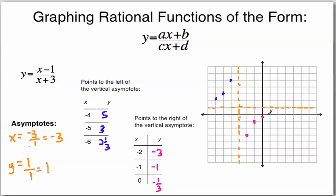Now we're going to draw in our curves. When you draw curves for a hyperbola, it's a curve that gets really close to the asymptote without ever crossing it. So we draw one branch here — really close to the asymptote without crossing it. Then we draw the second branch, connecting the dots with a nice curve, with the ends getting close to the asymptotes without ever crossing them. And that's all.